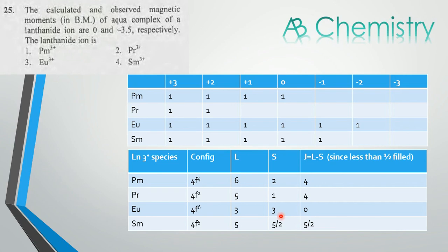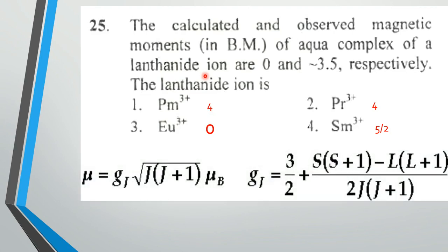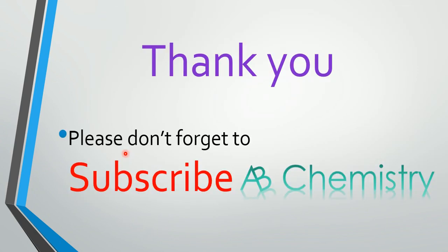Here the J value of Europium is 0. So the answer, according to Landé equation, if the J value is 0, the value of the calculated magnetic moment will be 0. The option will be 3. Thank you for watching, please don't forget to subscribe to AB Chemistry.